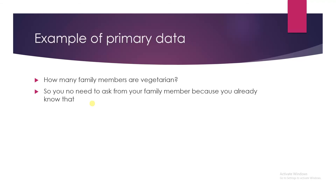Now let's move towards an example of primary data. Primary data is basically the knowledge you already have. So the question is: how many family members are vegetarian? This is your family — you already have an idea how many members are vegetarian or non-vegetarian. So this is primary data, because you already have information about your family.